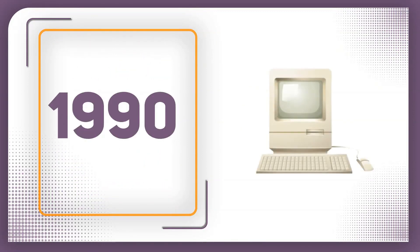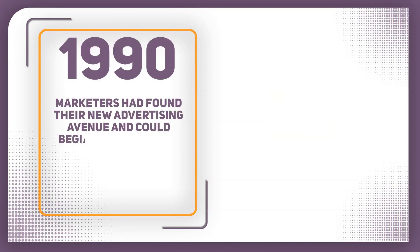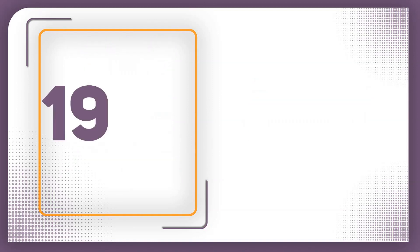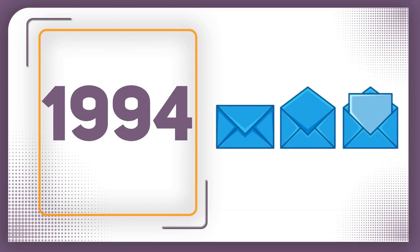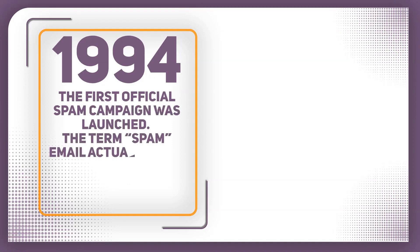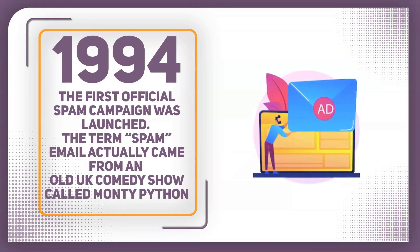In 1990, computers became more popular and easier to access at home, with millions of homes now connected to the internet. This meant that marketers had found a new advertising avenue and could begin to find ways to reach out and persuade customers using the World Wide Web. In 1994, while the sending of commercial emails had been banned at the beginning of the internet, a guy called Gary had sent the first email spam message back in 1978 to 600 people — he was reprimanded and told not to do it again. However, it was in 1994 that the first official spam campaign was launched. The term 'spam email' actually comes from an old UK comedy show called Monty Python and a sketch they did back in the 1970s.